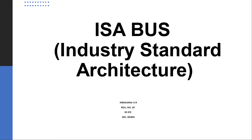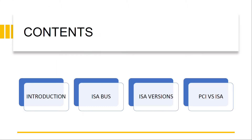It is a part of embedded systems. The contents included in this video are: introduction, which includes some terms we need to know before learning about ISA; ISA bus — its history and features; ISA versions, that is 8-bit and 16-bit versions; and PCI versus ISA — the difference between the two and why ISA was replaced by PCI. So let's move on.